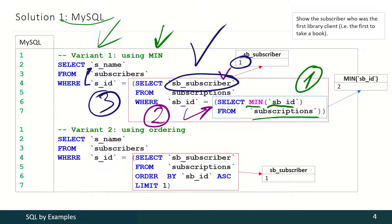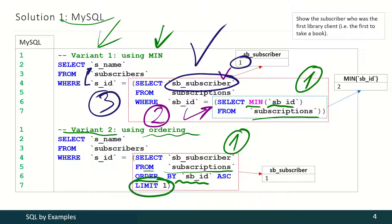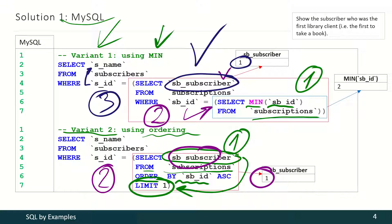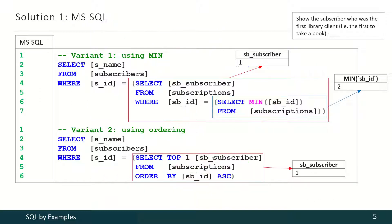That's how we achieve the final result. With the second approach we may use ordering. On the first step, we are selecting information from the subscriptions table, then ordering that information by subscription ID and selecting the first record — and the identifier of the subscriber that corresponds to the first record. And on the second step, once we have that identifier, we may transform that number into a subscriber name.